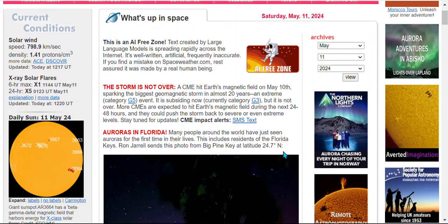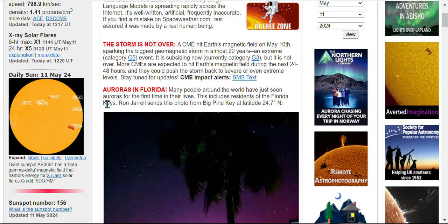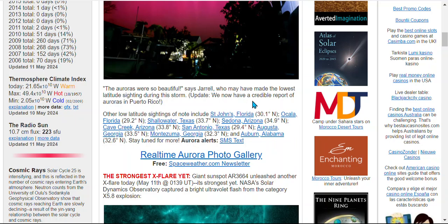Looking at spaceweather.com, it's not over. The storm is not over. We had auroras seen all the way down in Florida, in the Florida Keys. Now we have a credible report of auroras in Puerto Rico.